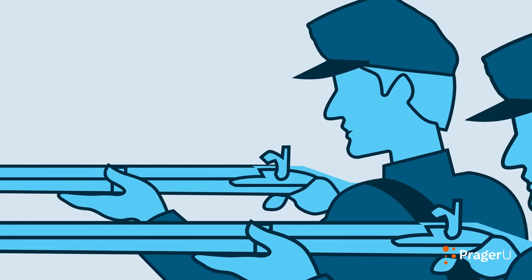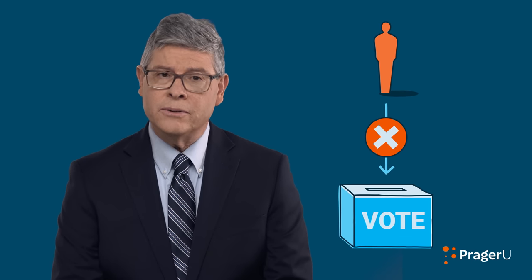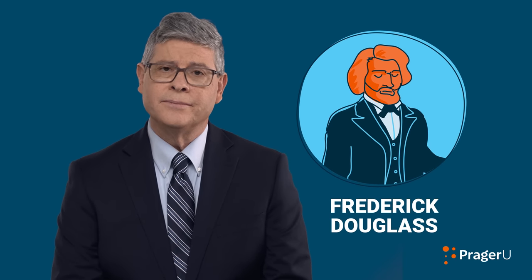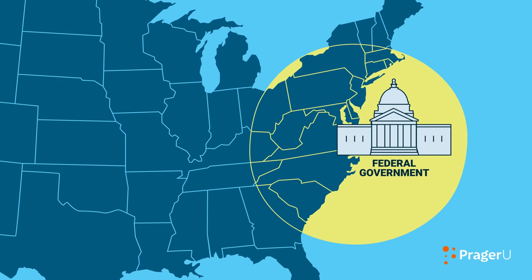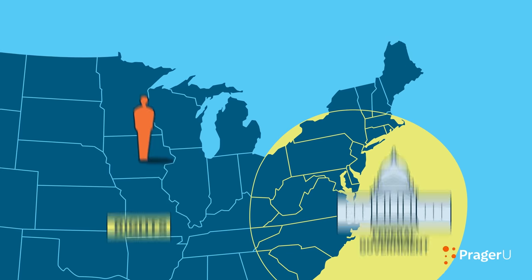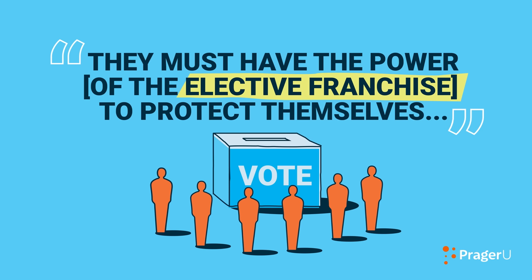Yet even this was not enough. Black Americans had fought and died alongside white Union soldiers. Despite their sacrifice, in most states, blacks were still denied the right to vote. To black civil rights leaders like Frederick Douglass, this was unacceptable. According to Douglass, the arm of the federal government is long, but it is far too short to protect the rights of individuals in the interior of distant states.